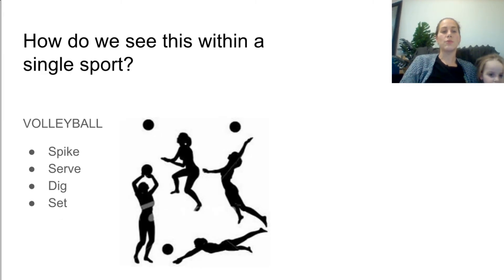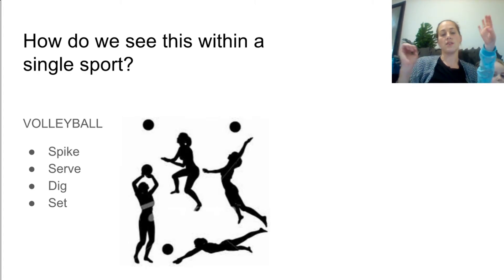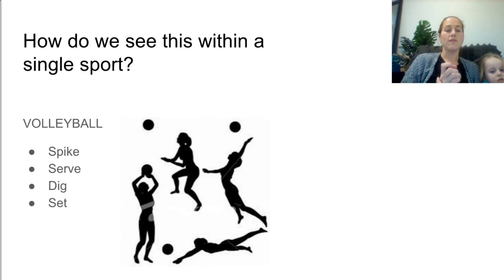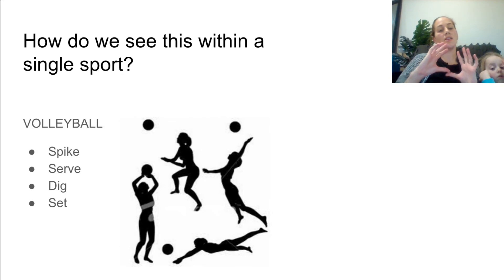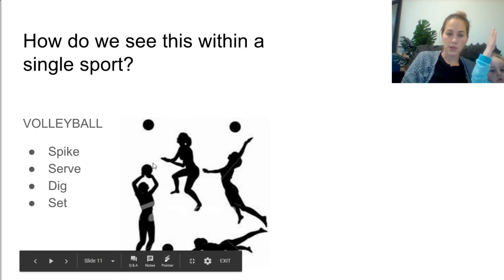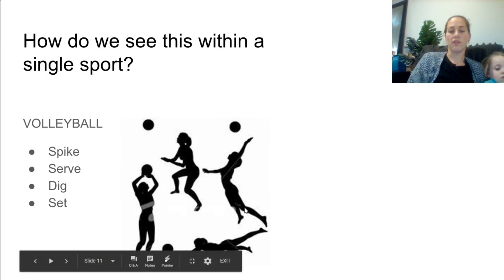In volleyball, the four main skills — spike, serve, dig, and set — each have a different angle, height, and speed of release. A spike is the fastest speed of release; a dig would be the slowest. A serve aims slightly up at maybe 35–40 degrees, while a set is around 80–90 degrees. For height, a dig is quite low to the ground, whereas a spike or serve involves jumping, giving a very high height of release.